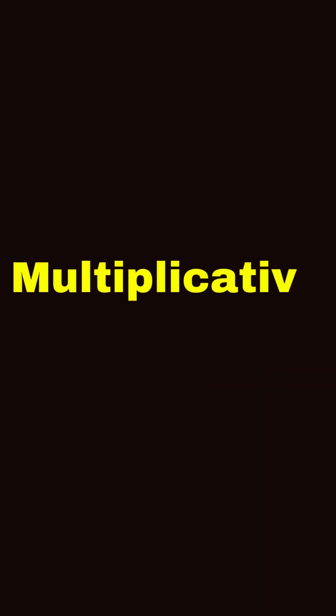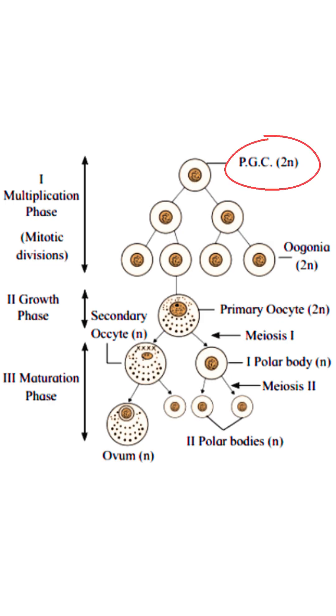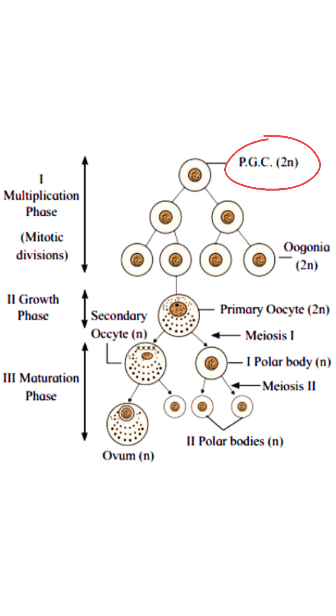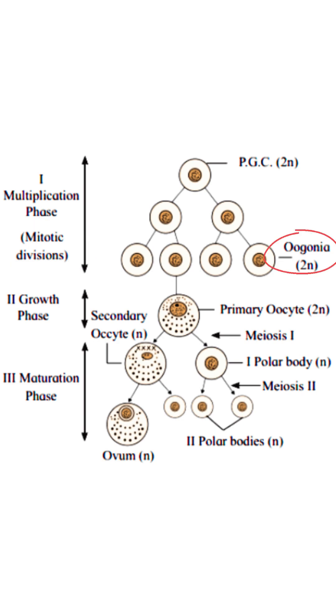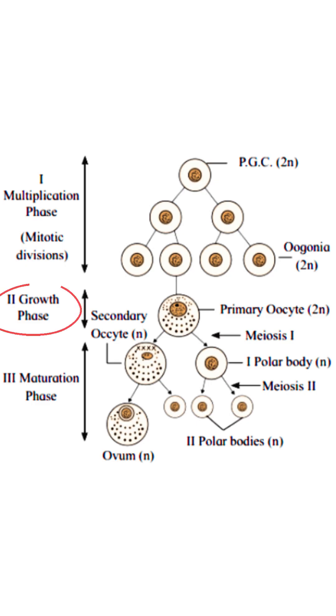Oogenesis has three phases within its mechanism. The first is the multiplicative phase. In this phase, primary germ cells of the germinal epithelium of the ovary undergo rapid mitotic division to form diploid egg mother cells called oogonia. The second is the growth phase.